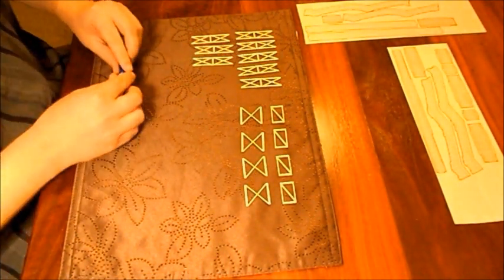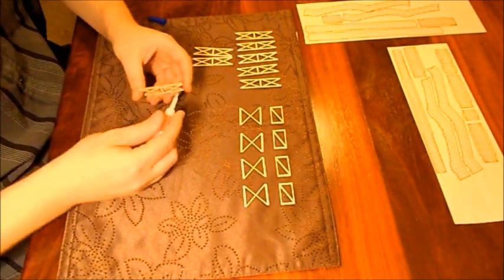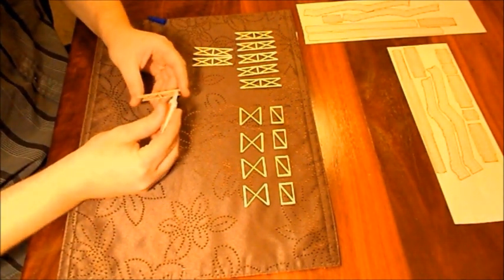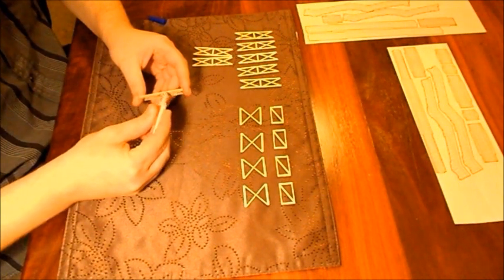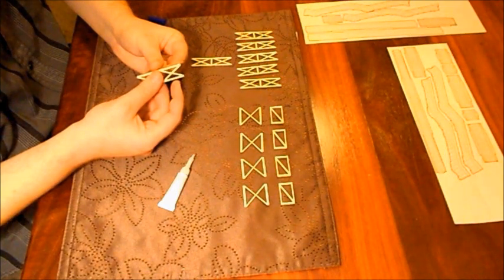Once you've removed all the support structures from the sheet, you can begin gluing the pieces together. Run a thin bead of superglue down the piece and then bring the second piece gently into contact.